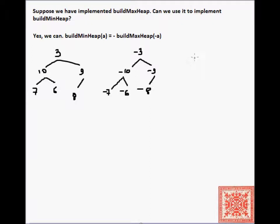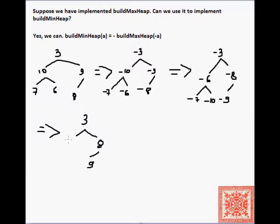The next step is to apply build max heap to this array. This is the second step. This is the first step: take the negative of the array, and once we have the negative of the array, we apply build max heap to it. We get minus 3, swap minus 8 with minus 9, then swap minus 6 with minus 10, and that's it. And then we take the negative of that, and we get 3, 8, 9, and 6 over here, 7, and 10. We get the minimum heap.